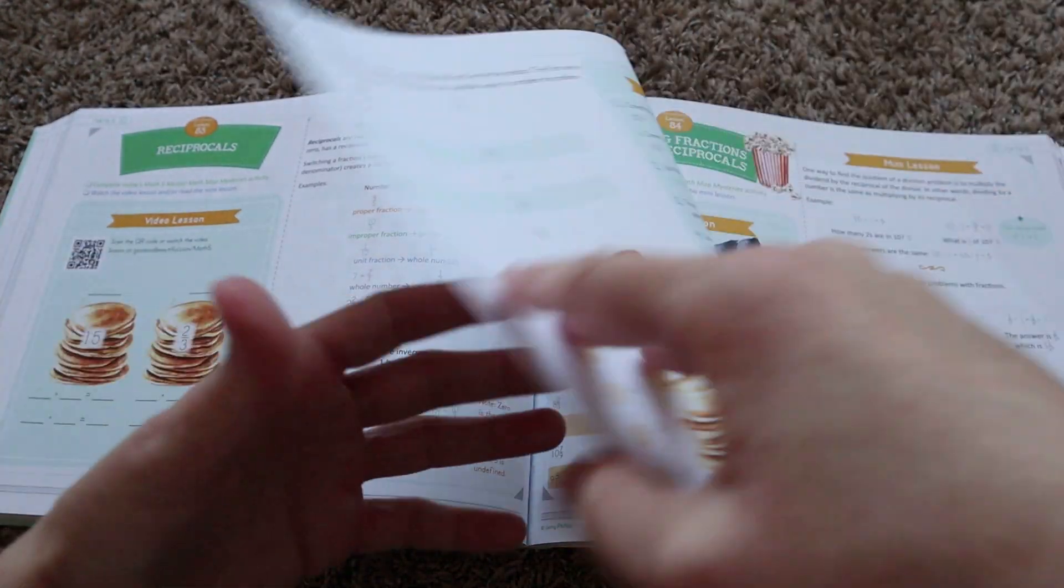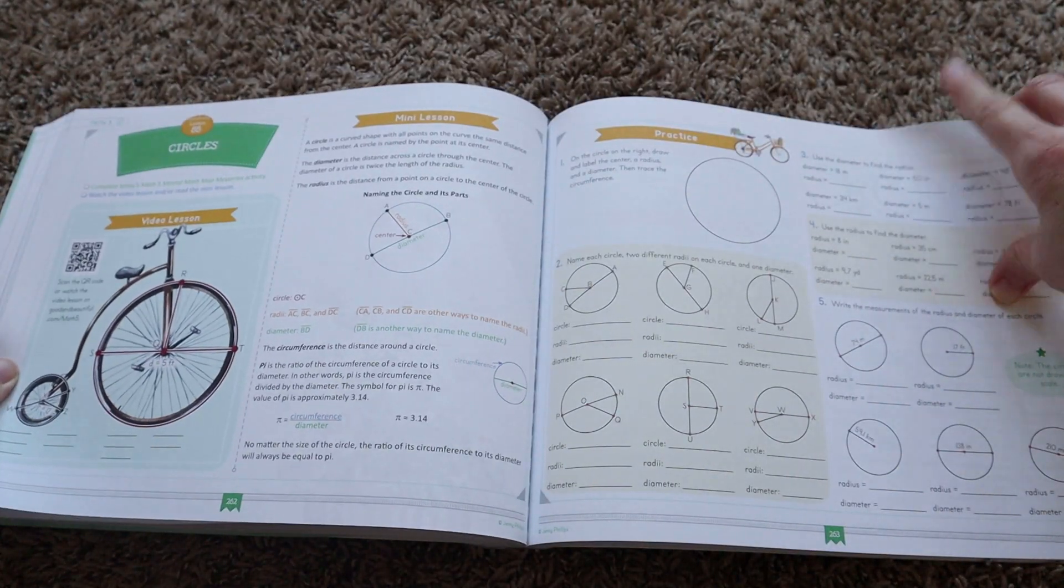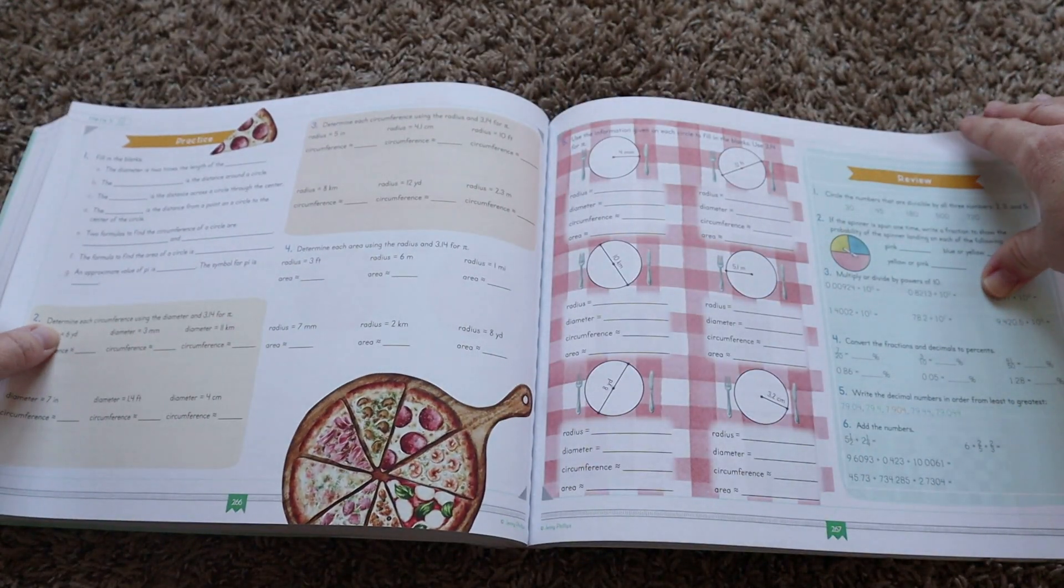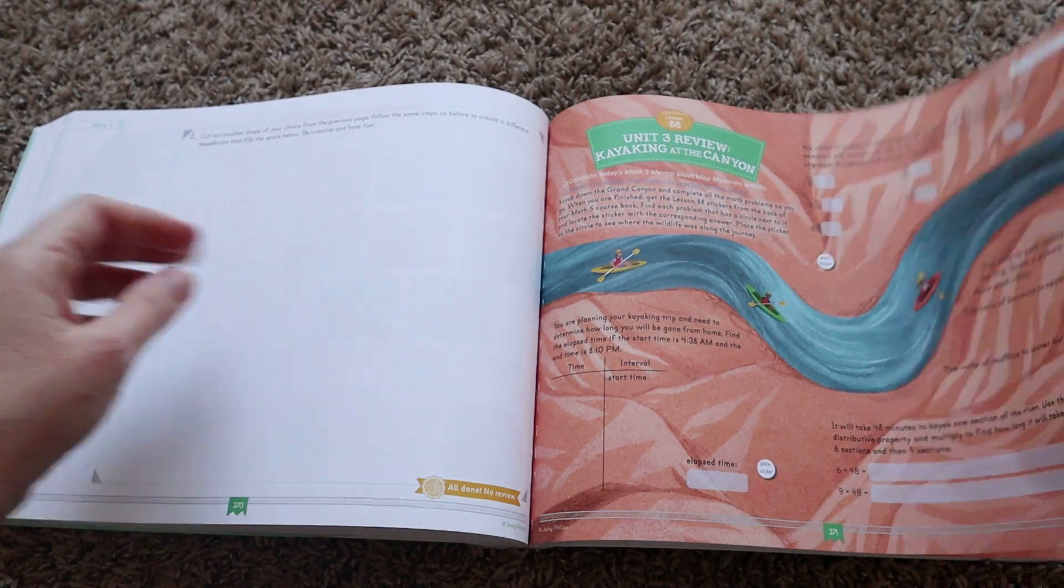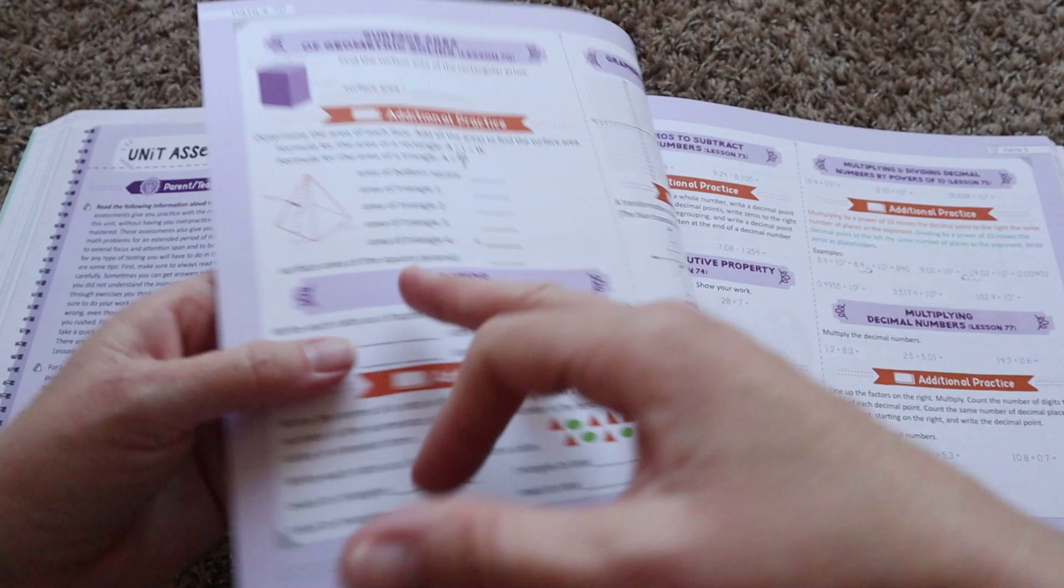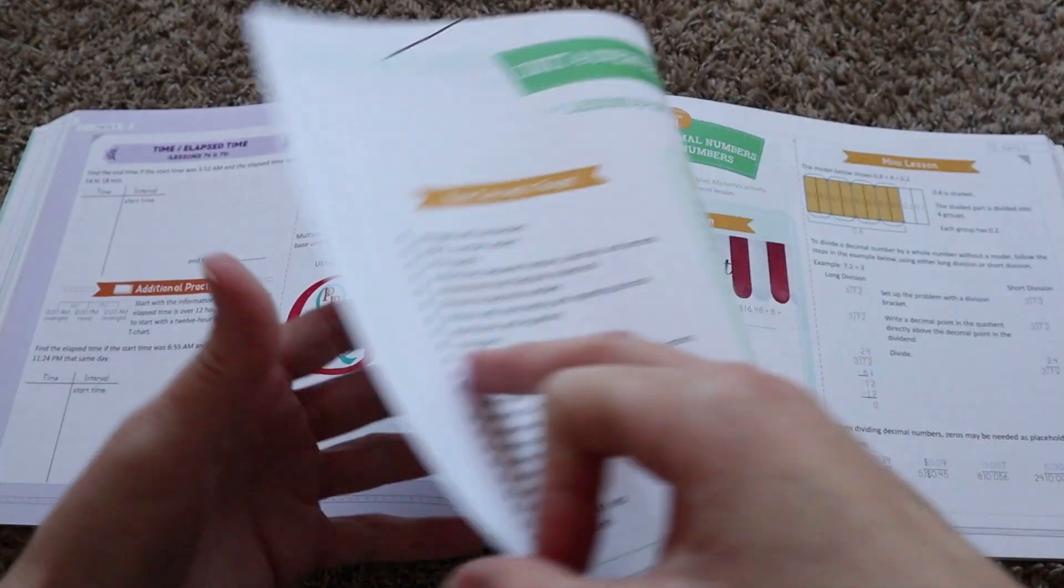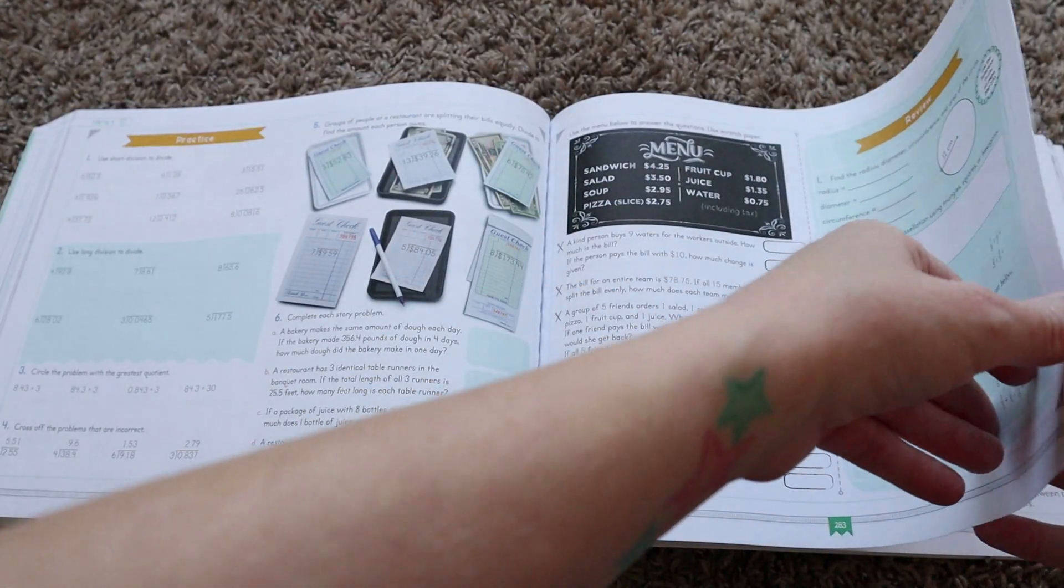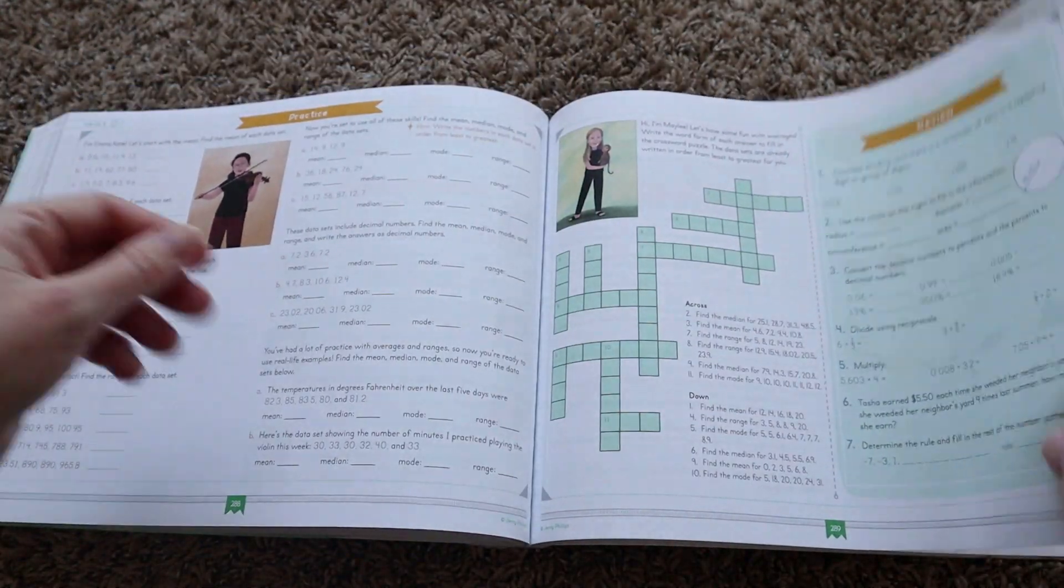And then one last thing that I want to mention is that while this curriculum is designed to be done independently by your child, you also know your child best. Some children, they still need that extra, you know, parental guidance when they get to the fifth grade course book, but you will regardless of whether or not your child is ready to work independently or still working with you, they will need some parent interaction when they do the mental math book, because you're going to be testing them for accuracy.